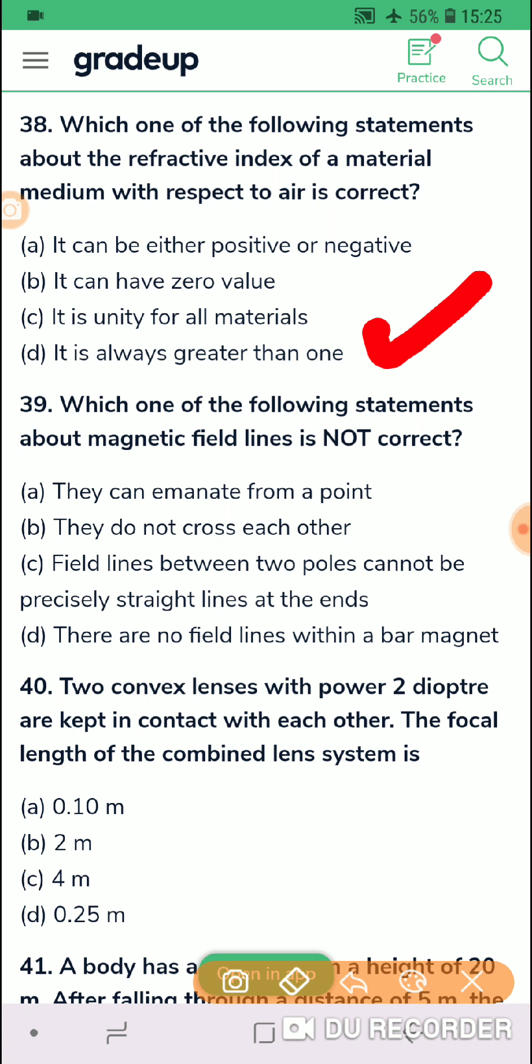Question 39, which one of the following statements about magnetic field lines is not correct? We need to be careful. They are asking about incorrect option. Let me read. They can emanate from a point. Yeah, from a point they can come out. They do not cross each other. This is correct. Field lines between two poles cannot be precisely straight line at the ends. They are at straight lines at the end. There are no field lines within a bar magnet. Yeah, this is wrong. In a bar magnet there are field lines. So I will go for option D because this is wrong.